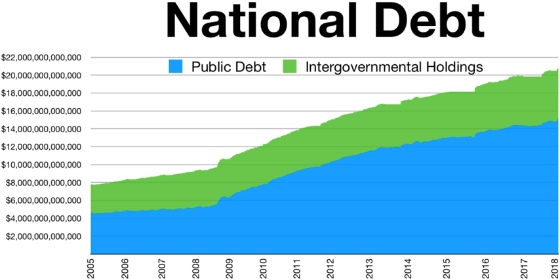Public debt fell during the 1990s, due to decreased military spending, increased taxes, and the 1990s economic boom. Public debt rose sharply in the wake of the 2007–2008 financial crisis and the resulting significant tax revenue declines and spending increases. In their September 2018 monthly report, based on data from the Treasury Department's Daily Treasury Statements, the Congressional Budget Office wrote that the federal budget deficit was approximately $782 billion for fiscal year 2018, which runs from October 2017 through September 2018. This is $116 billion more than in FY 2017.